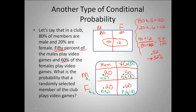We want to find the probability that a person plays video games — the probability of B. The values in the B column are conditional probabilities. We're trying to find the total, unconditional probability of playing video games. We started by taking 0.8 times 0.5, which gave us 40. Working in decimals and probabilities, we take 0.8 multiplied by 0.5.